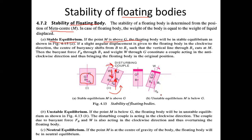For unstable equilibrium of a floating body, the metacenter is below G. In this case, the weight acts downward through the center of gravity and buoyancy force acts upward through the shifted center of buoyancy. The generated couple is in the same direction as the applied couple — both clockwise — forming an overturning couple. This body will keep rotating and try to overturn, which is dangerous and undesirable. When metacenter is below G, the metacentric height is negative and the condition is unstable equilibrium.